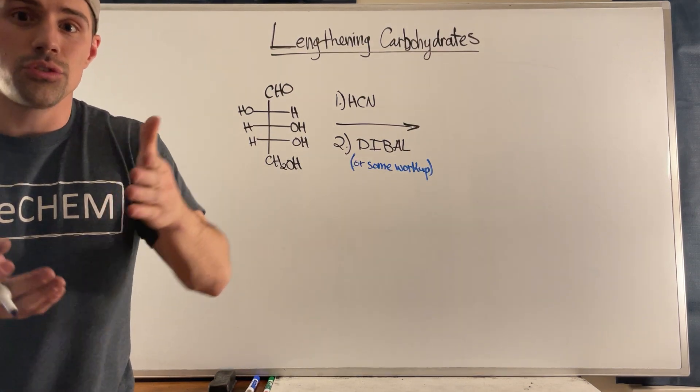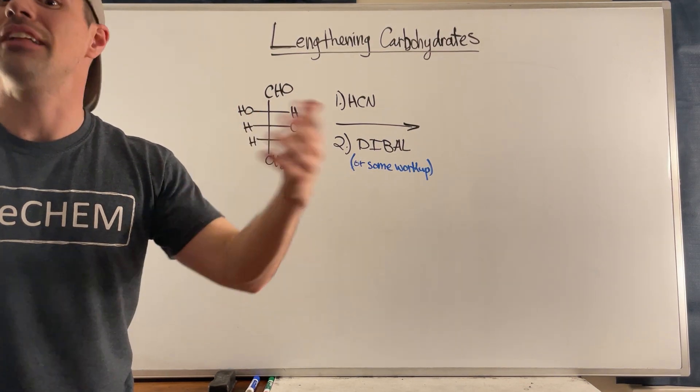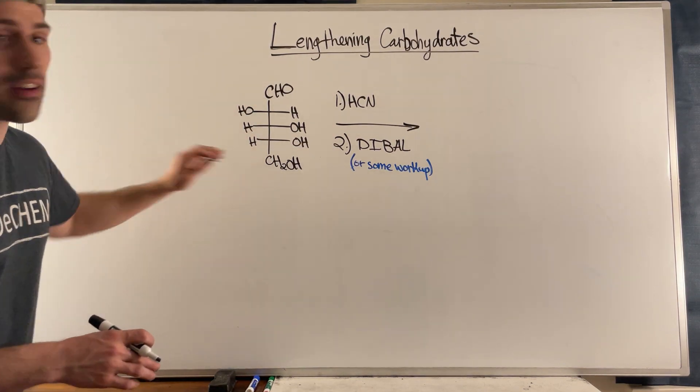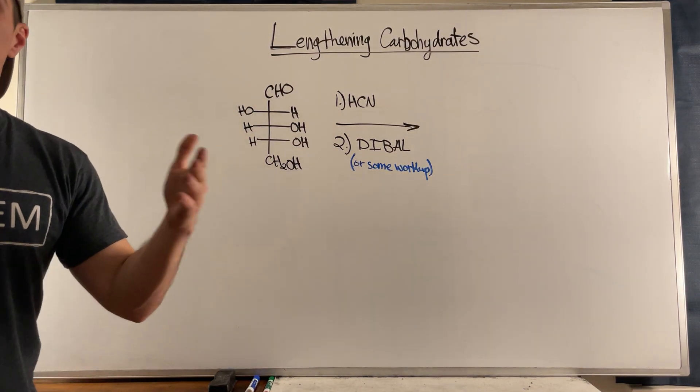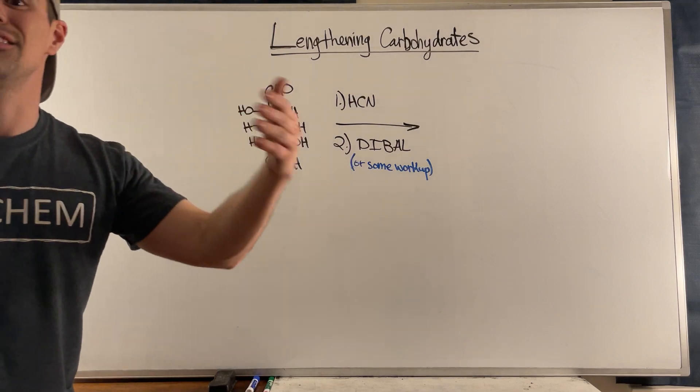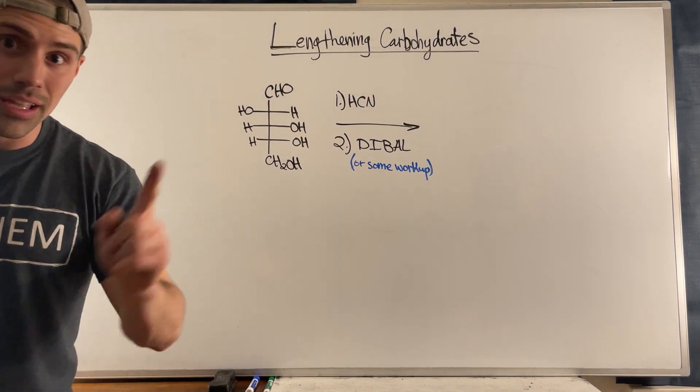Take it from this short guy, and maybe you want to make them longer. There's a way to do it. There's a way to take a carbohydrate. Say you have a pentose, for example, right? Say you have this lovely aldo pentose and you want to make it into an aldo hexose.